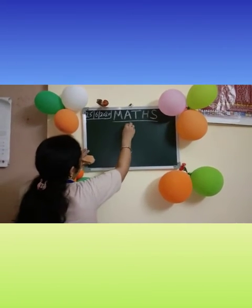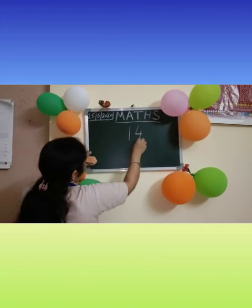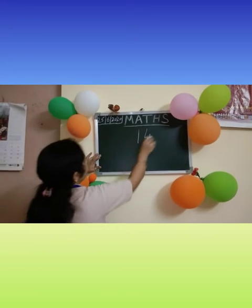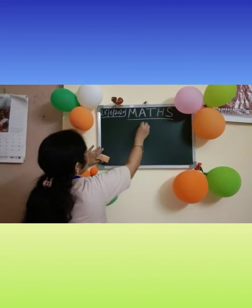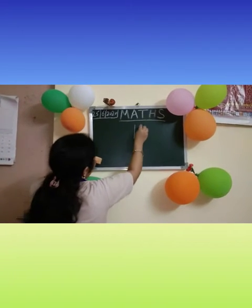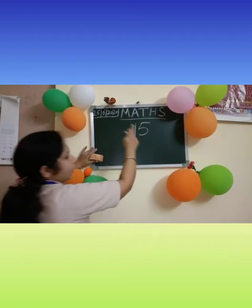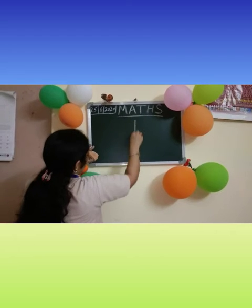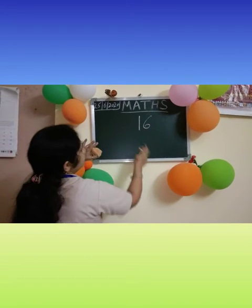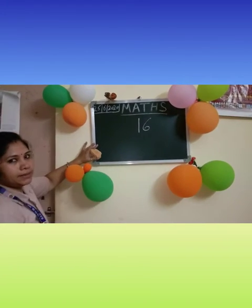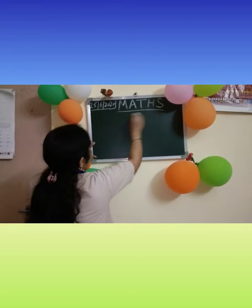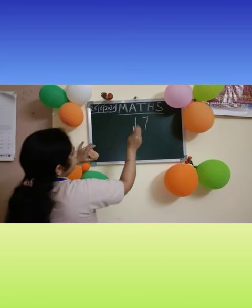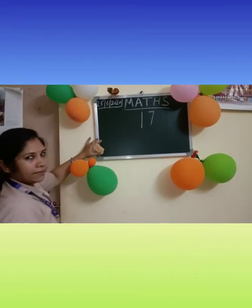Next number 1 and 4, 1, 4, 14. Now next number 1 and 5, 1, 5, 15. Now next number children 1 and 6, 1, 6, 16. Next number 1 and 7, 1, 7, 17.